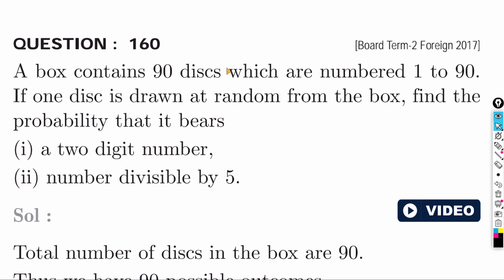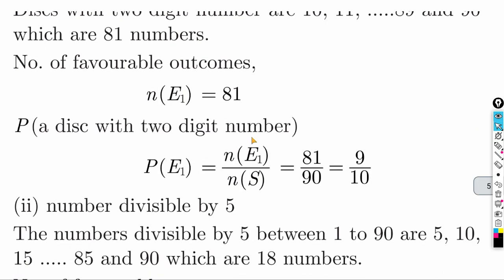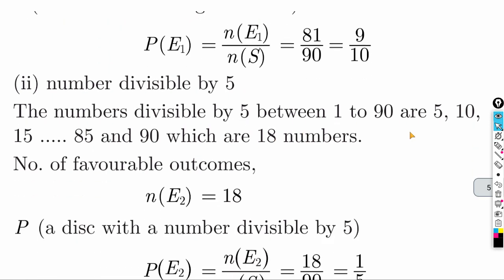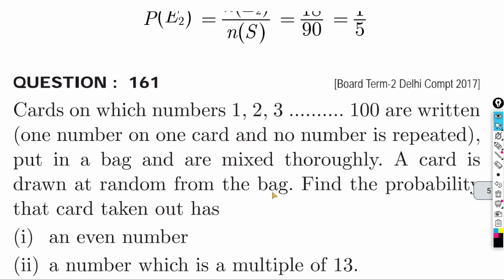A box contains 90 disks numbered 1 to 90. Find probability of drawing a two-digit number. Single digit numbers (1–9) = 9. So two-digit numbers = 90 - 9 = 81. Probability = 81 by 90 = 9 by 10. Find probability divisible by 5: numbers are 5, 10, 15, ... — total 18. Probability = 18 by 90 = 1 by 5.